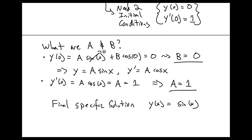So we see that for a second order differential equation, we had two arbitrary constants, and we needed two initial conditions to find those constants.